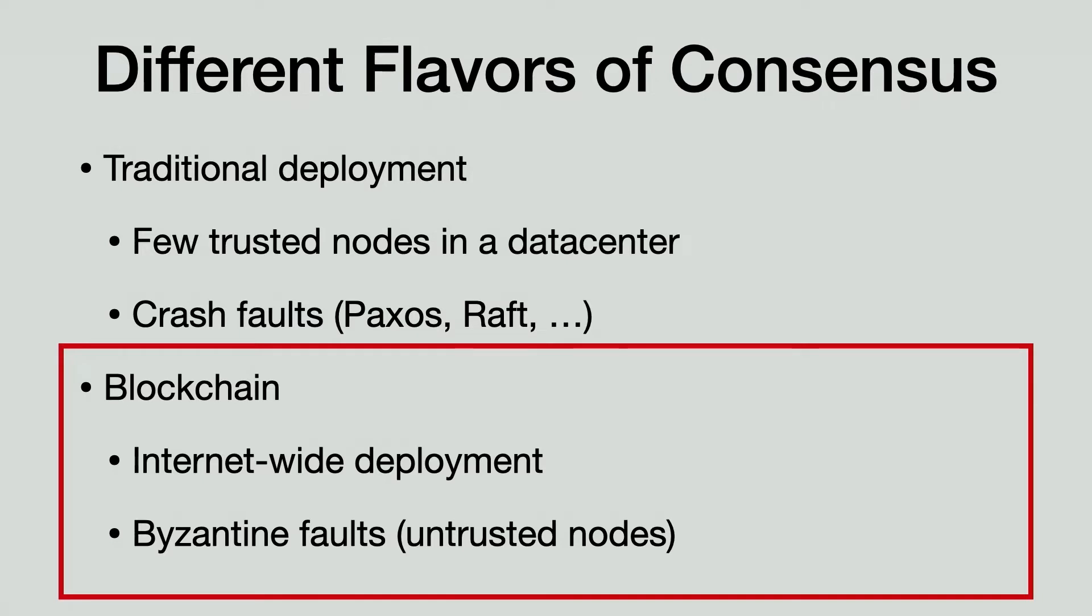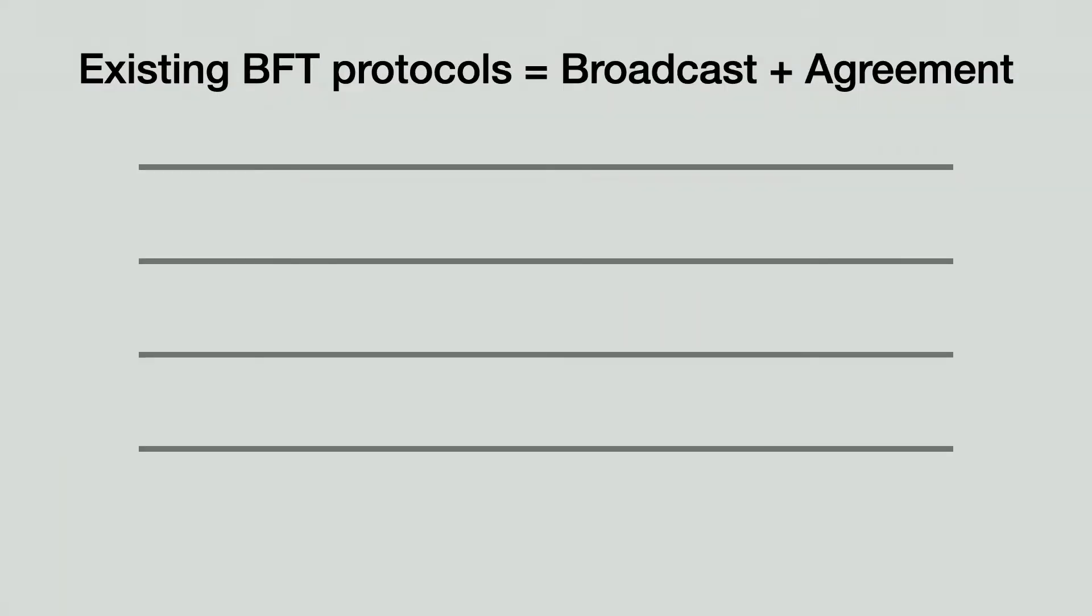You might think that there are so many BFT consensus protocols already, so what's new here? It turns out that a blockchain or cryptocurrency usually involves servers across the public internet. This is quite different from the usual BFT consensus scenarios, which are data centers or well-provisioned WANs. The main challenge brought by the internet is bandwidth variability, both across different locations and across time.